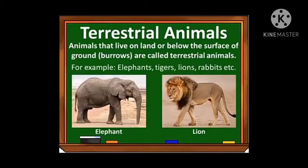We shall study each one briefly. The first type is terrestrial animals. Animals that live on land or below the surface of the ground are called terrestrial animals — for example, elephants, tigers, lions, and rabbits. We already studied terrestrial plants in our second chapter on adaptations in plants. Here, terrestrial animals means animals which live on land.